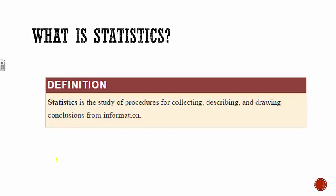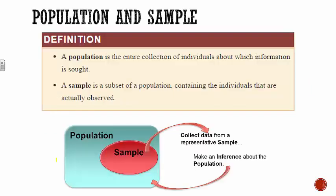Statistics is about looking at data, analyzing it, drawing conclusions from it, and using it to get an idea of what's going on in an entire population. We have two different things: a population and a sample. Your population is the entire collection of individuals — everyone you're looking to get information from — whereas your sample is a subset of that population, like a smaller version of it.